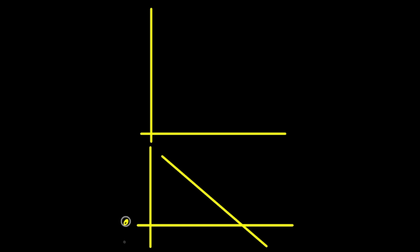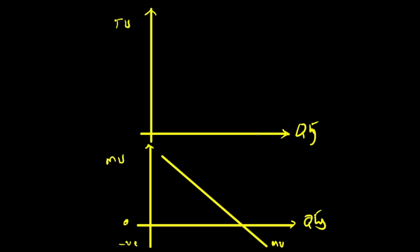You need to make two graphs: one for quantity consumed and total utility, and another for quantity consumed and marginal utility. The marginal utility curve is negatively sloped, reaching zero at a certain point and then moving into the negative region. On the x-axis we have quantity, on the y-axis marginal utility. On the upper graph, quantity is on the x-axis and total utility on the y-axis. At six units consumed, marginal utility equals zero.